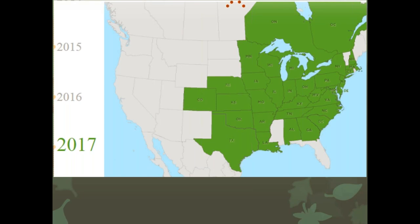Until this year, emerald ash borer had not been detected or confirmed in Vermont, but if you look at the map, there's no surprise — you're surrounded by confirmed states all around you. It took about 12 years to spread from Detroit to Boulder and from Detroit to Boston, mostly through people moving infested material.